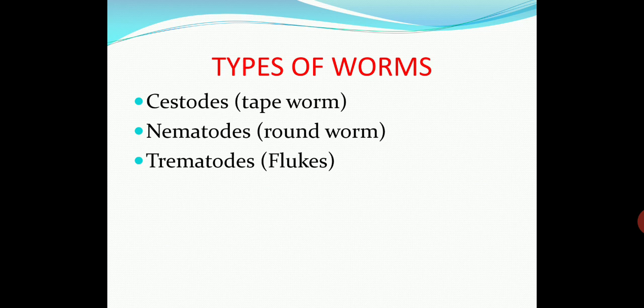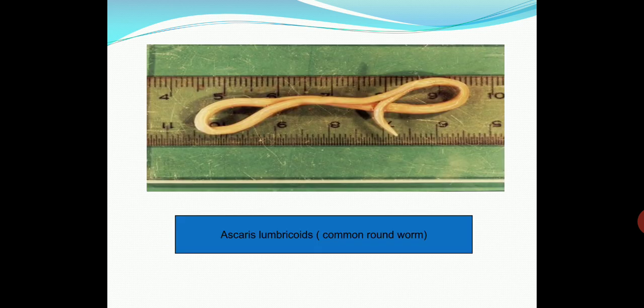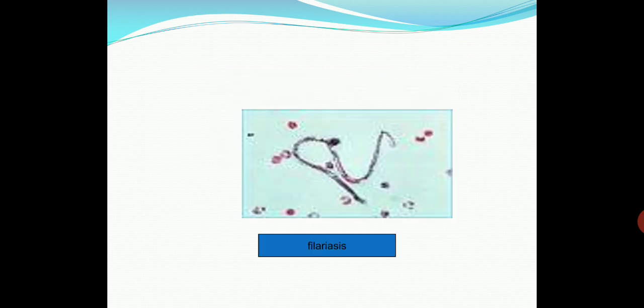There are basically three types of worms: cestodes, that is tapeworm form; nematodes, that is roundworm; and trematodes, that is flukes. Examples include the common roundworm, that is Ascaris lumbricoides, and filariasis.